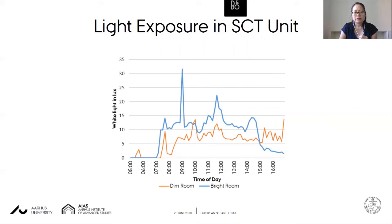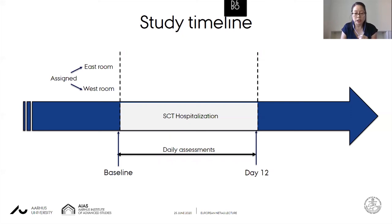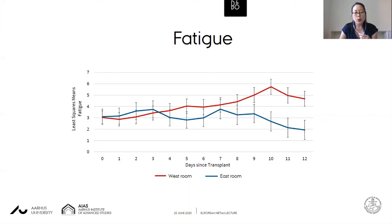We wanted to see if there was a difference in symptomatology during hospitalization based on room assignment. Bear in mind that room assignment was based on availability, not clinical parameters — essentially the luck of the draw. The clinical team generally assigned patients to east rooms first, and when those filled up, to west rooms. The east rooms were noticeably brighter, facing the lake.